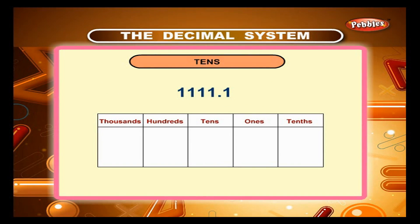Now, let us write the number 1111.1 in the place value chart. The dot placed between the numeral in the ones place and the numeral in the tens place is called a decimal point.